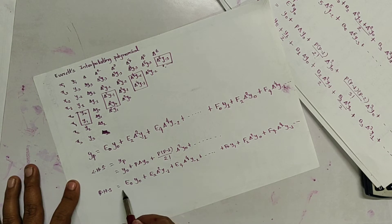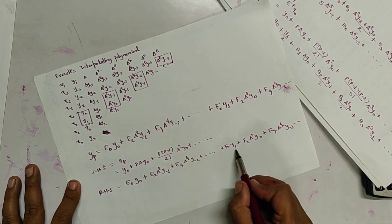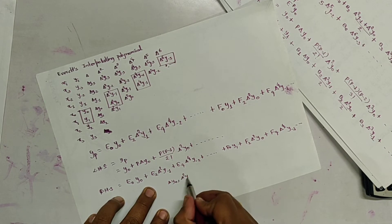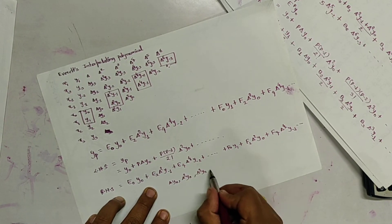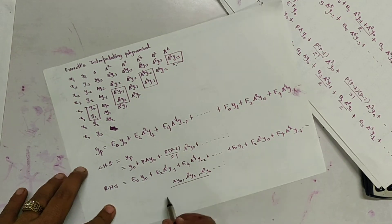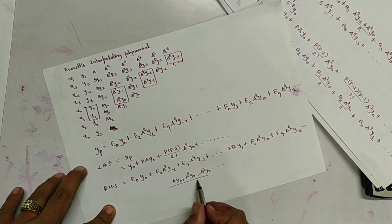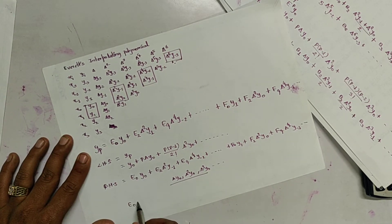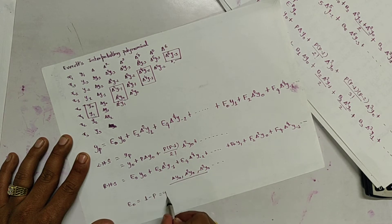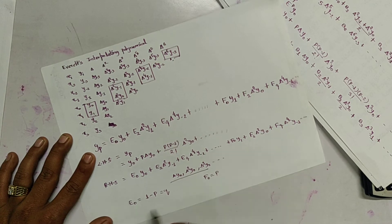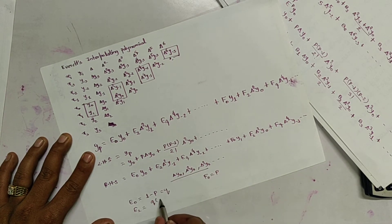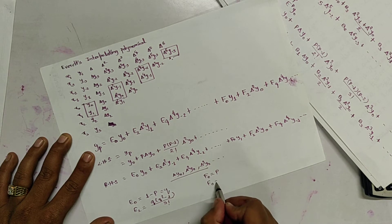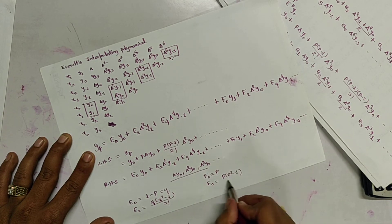Converting the RHS terms of y-minus-1, y-minus-2, y1 into the form of y0, del y0, del-squared y0, del-cubed y0, and so on, and converting, we get all terms in y0. So we can compare with LHS. After comparing we get: e0 equals 1 minus p (let it be q), f0 equals p, e2 equals q(q squared minus 1) over 3-factorial.